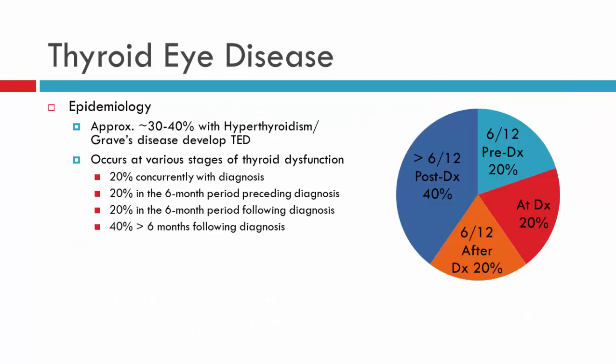Looking at the epidemiology of the condition: not all patients who have hyperthyroidism or Graves' disease develop thyroid eye disease. Only 30–40% develop thyroid eye disease. It's also worth noting that thyroid eye disease can occur at any point during the stages of thyroid dysfunction — it can occur before thyroid dysfunction is detected, afterwards, or concurrently. Statistically, about 20% of patients are diagnosed with thyroid eye disease concurrently at the time they receive the diagnosis of thyroid dysfunction.